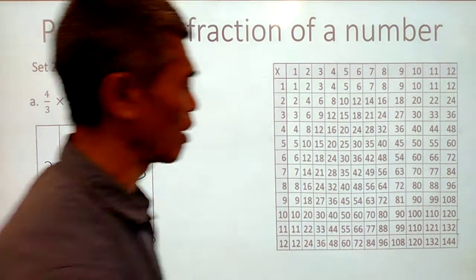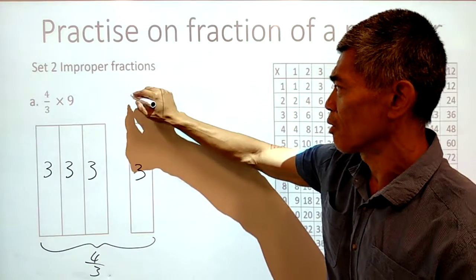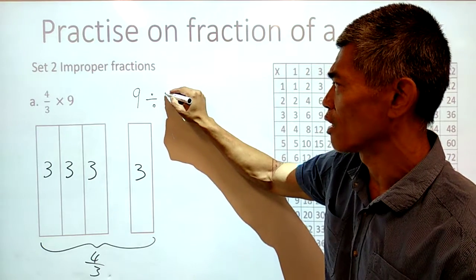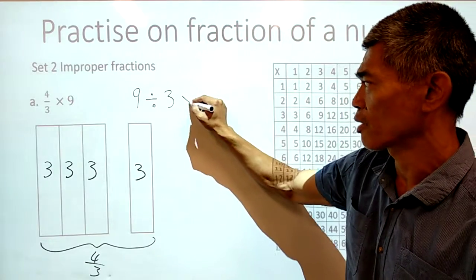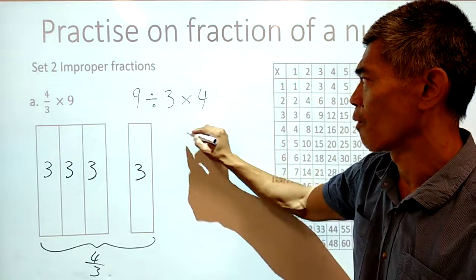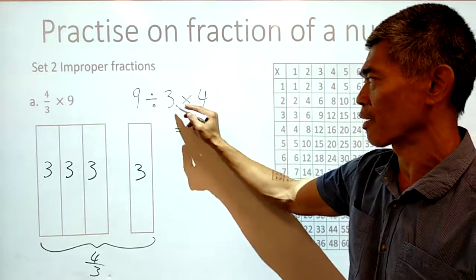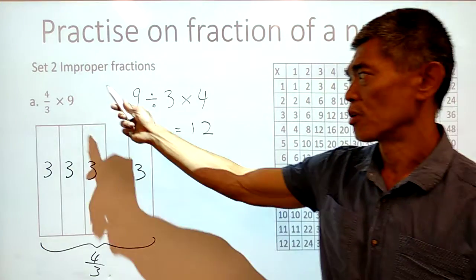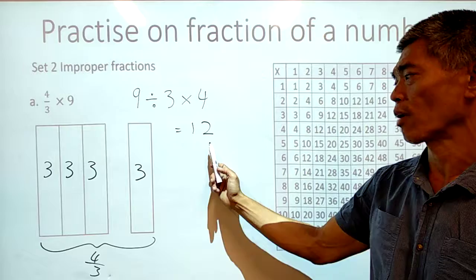How does that work out with division and multiplication? We take 9 divided by 3 to get 3 in each part, and then we're just going to multiply that by 4. That gives us 9 divided by 3 gives you 3, 3 times 4 gives you 12. So, 4 thirds of 9 equals 12.